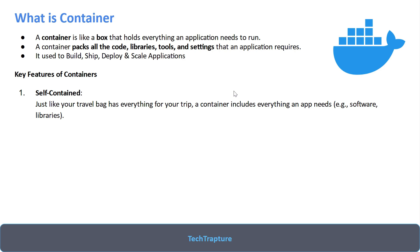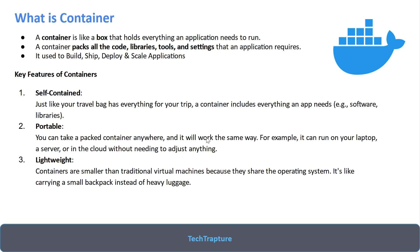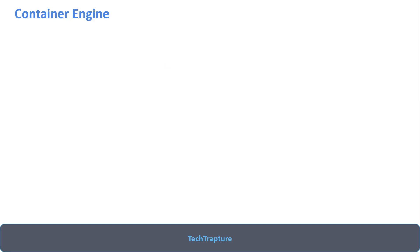The key features of containers are: Self-contained — just like a travel bag has everything for your trip, a container includes its own code, libraries, tools, and configuration files. Portable — you can use the same container image on Google Cloud, AWS, your laptop, or any server without adjusting anything. Lightweight — containers are smaller than traditional virtual machines. Isolated — each container works independently, so one app won't interfere with another.